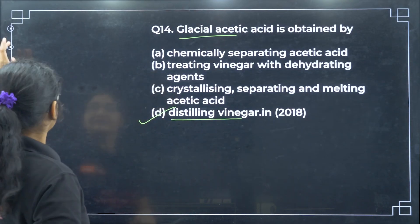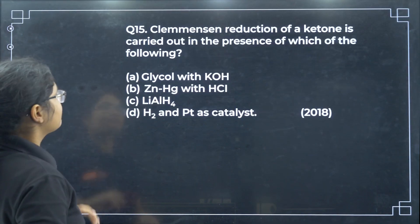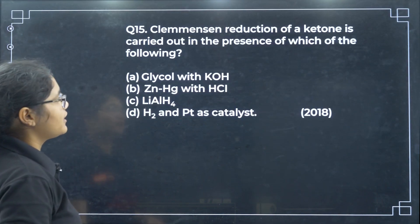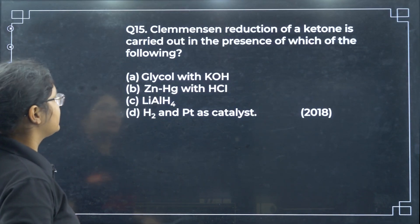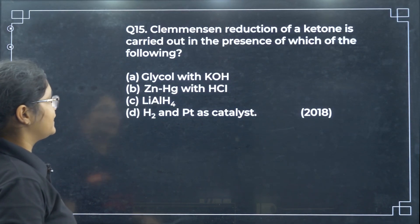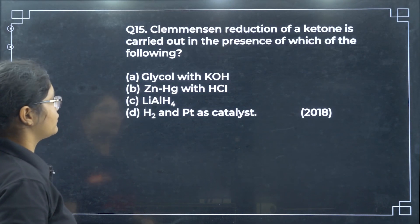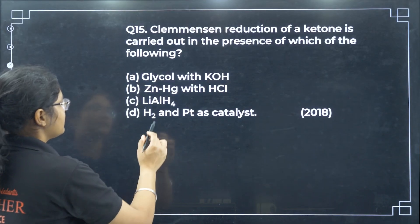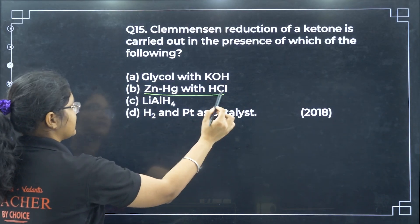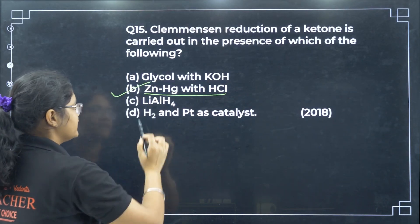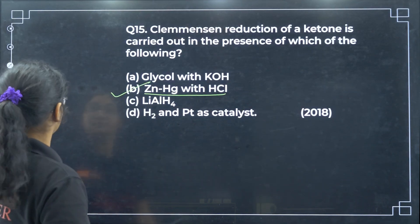Clemmensen reduction of a ketone is carried out in the presence of Zn-Hg and HCl — option B. Direct name reaction question.